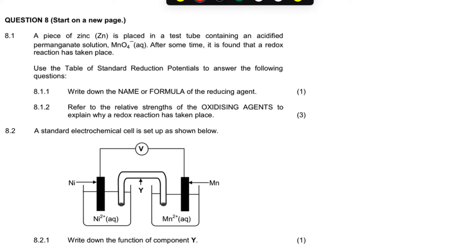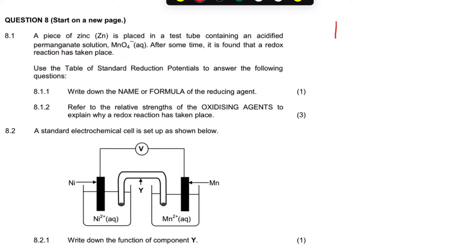Good day folks, welcome to my YouTube channel. Today we're going to look at the electrochemistry question paper — it's a November 2022 DBE question paper. A piece of zinc is placed in a test tube containing an acidified permanganate solution. Let's have the drawing for that.